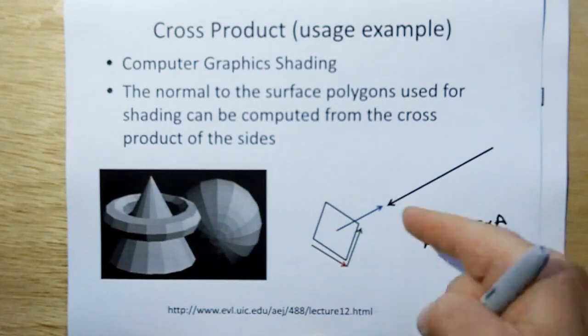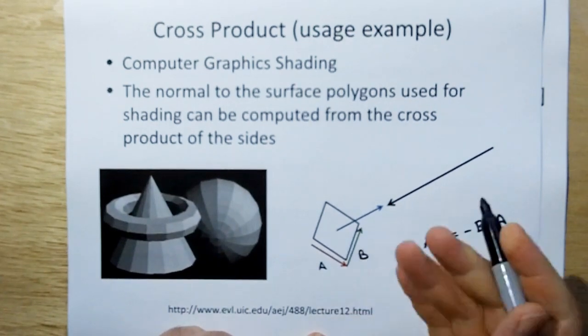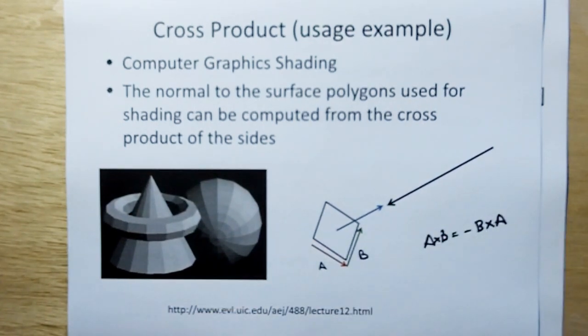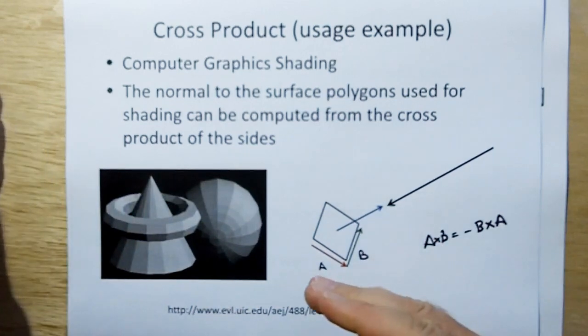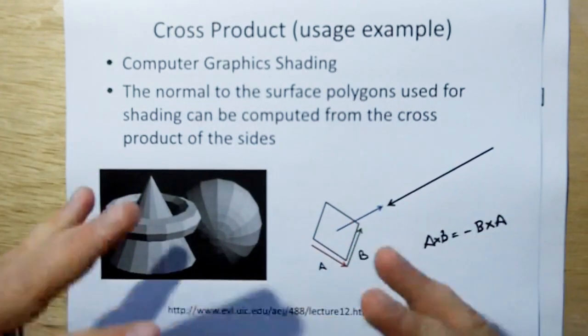So it depends on which one you define as A and which one you define as B. That would tell you what the surface is. So if you define this as A and this as B, then your normal would be in the direction toward the light. So you got to be careful about which one you decide is going to be A and which one you're going to decide as B, because you could have your figure drawn inside out.